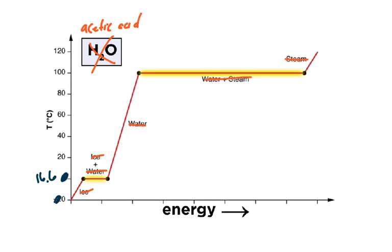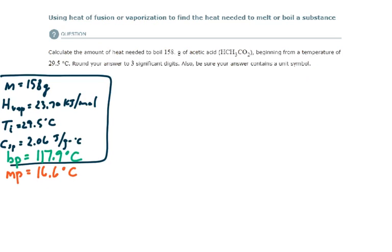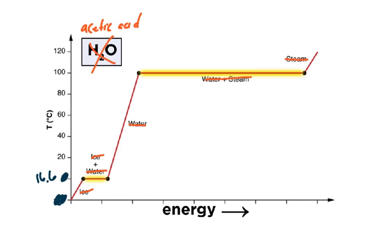And the boiling point, the phase change from liquid to gas, what is that? 117.9 degrees Celsius. So let's change this to 117.9, not 100. So here we have liquid, here we have gas. This is the boiling point, this is the melting point.